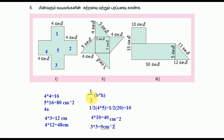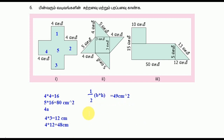So 40 cm² plus 9 cm². Now 40 plus 9 is 41 cm². Okay, so how are we going? We will answer. Here we have a hand. So how are we going to find it? We are going to find 41 cm².